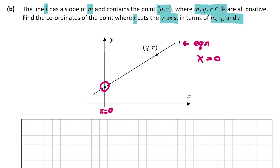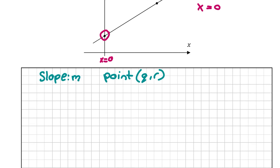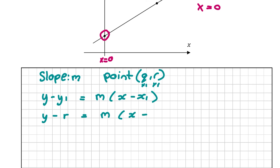Let's find an equation for L. We have the slope as M and we know the point (Q, R) is on the line L, so we have a point and a slope — that's what we need. I'm going to use the formula Y - Y1 = M(X - X1), where X1 = Q and Y1 = R. Filling this out: Y - R = M(X - Q), so Y - R = MX - MQ.